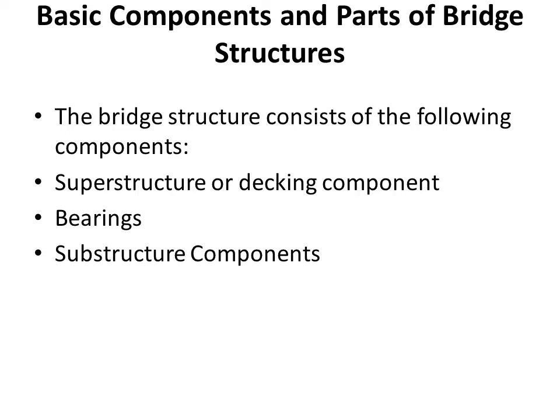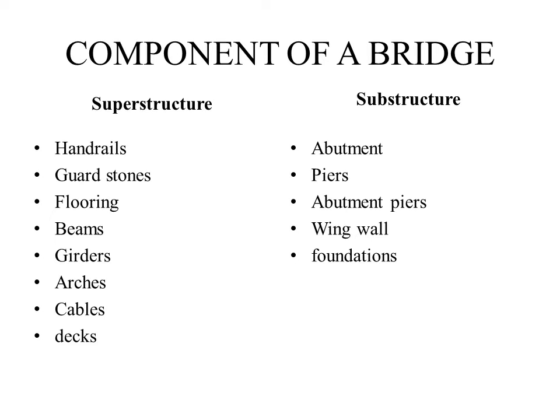The bridge consists of two parts: superstructure and substructure. Bearings are the bridge between the superstructure and substructure components. The components of the superstructure are handrails, guard stones, floor rings, beams, girders, arches, cables, and decks. The components of the substructure are abutments, piers, wing walls, and foundations.